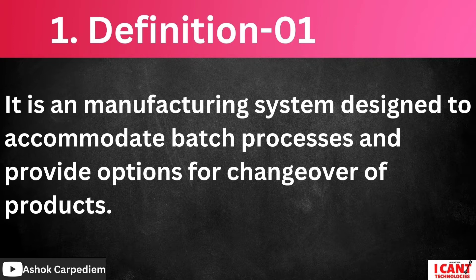So now we will see only about the definition. What is this programmable automation? It is a manufacturing system designed to accommodate batch process and provide options for the changeover of products. What is meant by batch process? Batch process is a type of process in the industry where it may change batch by batch. For example, in the first batch, I am producing 10mm tablets.